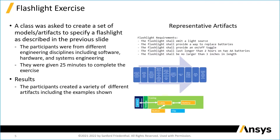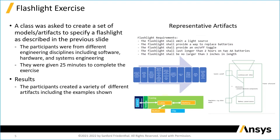Another artifact was more of a block diagram showing the different elements of the flashlight and some of the functions they perform. An additional artifact looks something like a flashlight itself and addresses some of the elements. These were all really good examples of what a typical, good engineer produces with the tools they have at hand.